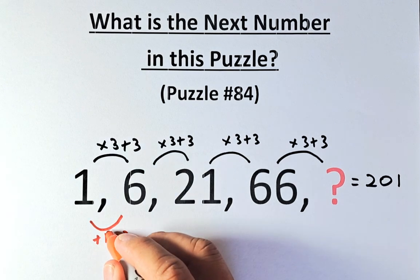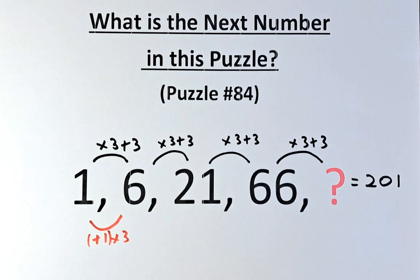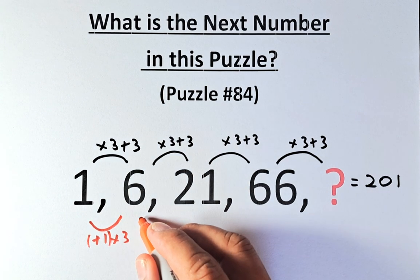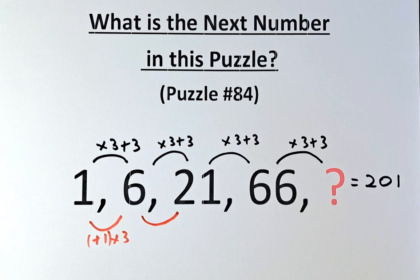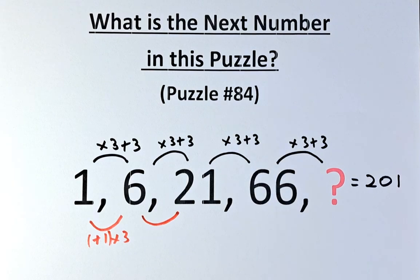We need to add 1 first, then multiply by 3. So 1 plus 1 is 2, and 2 times 3 gives us 6. Similarly, from 6 to 21, we add 1. So 6 plus 1 is 7, and 7 multiplied by 3 gives us 21.